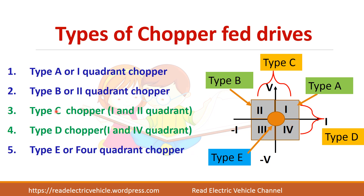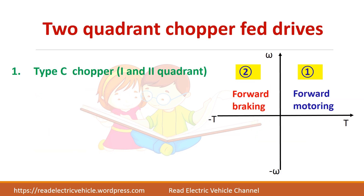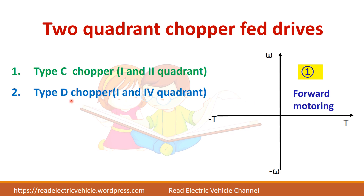In this video, we will see about the two quadrant chopper — that is type C and type D chopper. Type C chopper operates in first and second quadrant: first quadrant gives forward motoring operation and second quadrant gives forward braking operation. Type D chopper can operate in first quadrant as well as fourth quadrant.